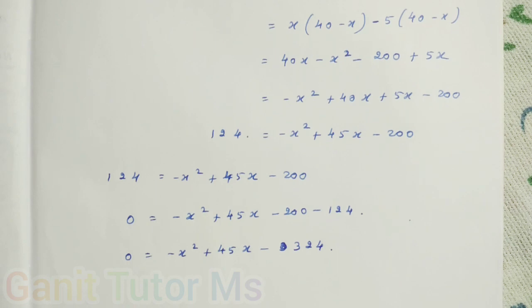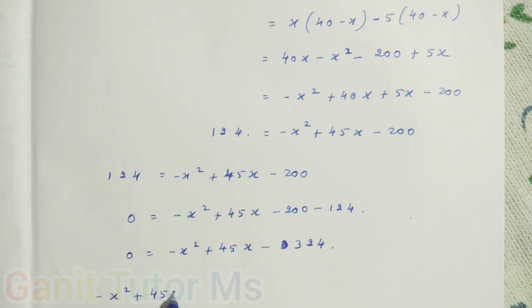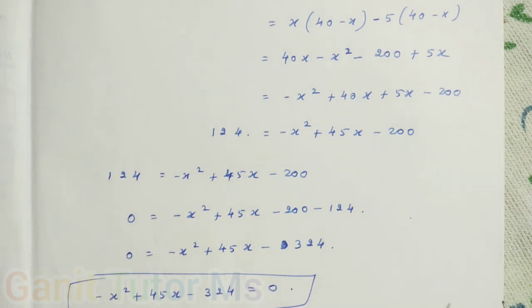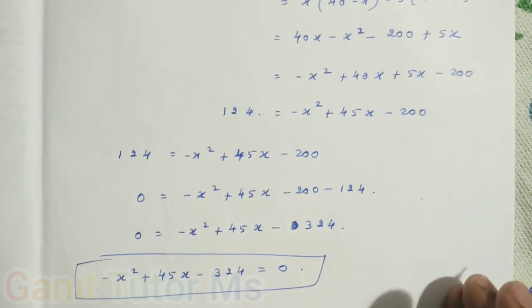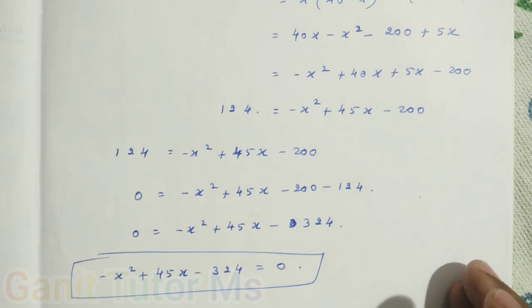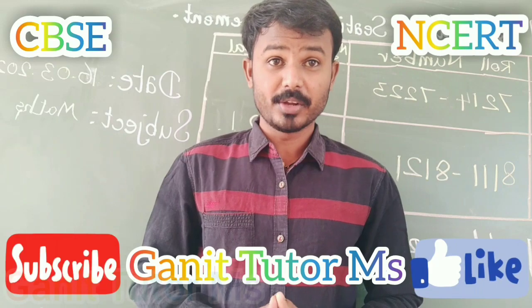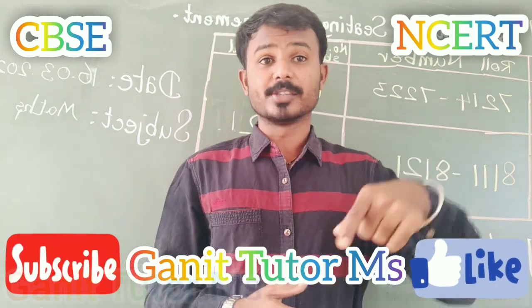Now we find out that is an equation. We can write like minus x squared plus 45x minus 324 equal to 0. So it is a required mathematical representation of a given situation. I hope in this video you may clear about the problem. Thank you for watching my video. If it is any doubt, you can ask me in a comment. Thank you.